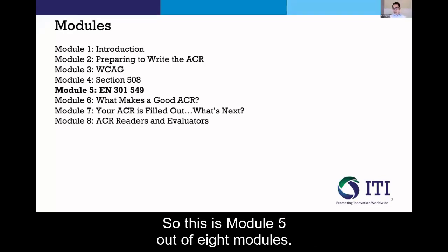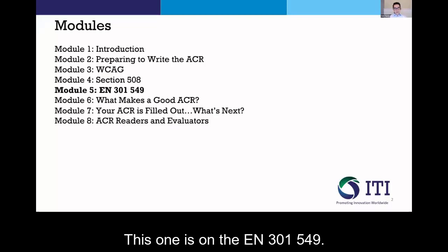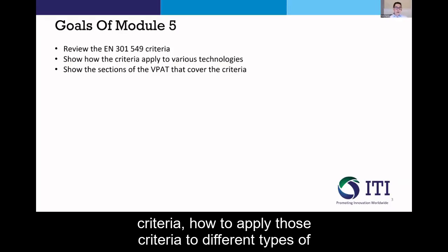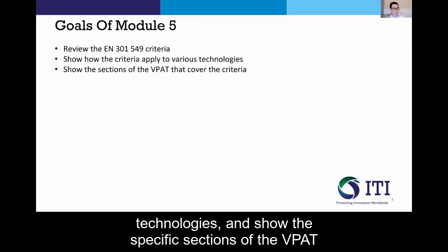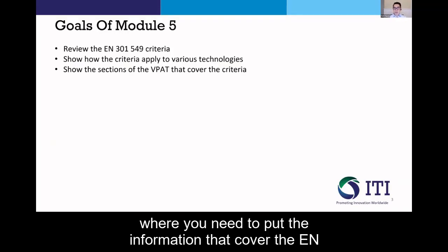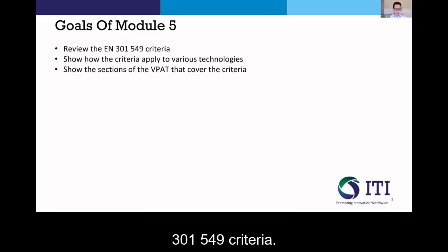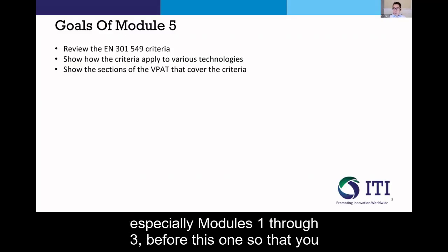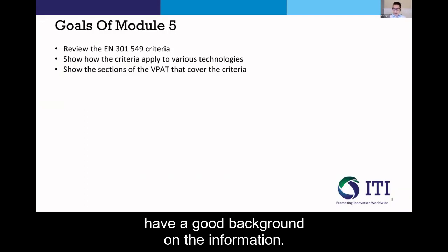This is Module 5 out of 8 modules, and this one is on the EN 301 549. In this module, we'll be covering the EN 301 549 criteria, how to apply those criteria to different types of technologies, and show the specific sections of the VPAT where you need to put the information covering the EN 301 549 criteria. We recommend that you watch the previous modules, especially modules one through three before this one, so that you have a good background on the information.